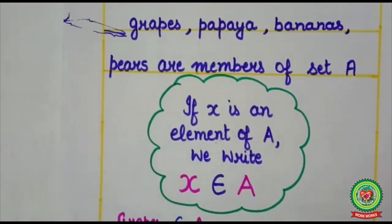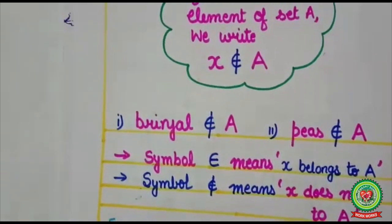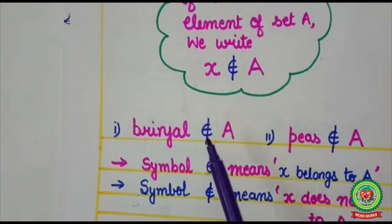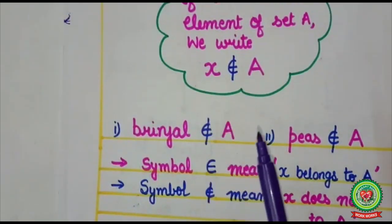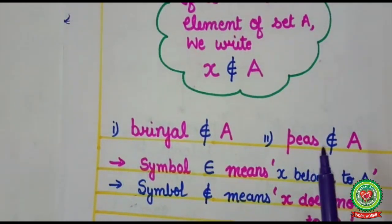On the other hand, here if I will take brinjal, so brinjal is not present in given set. Here I will write doesn't belong to set A. Peas is also not member of set A, so here also I will write doesn't belong to set A.